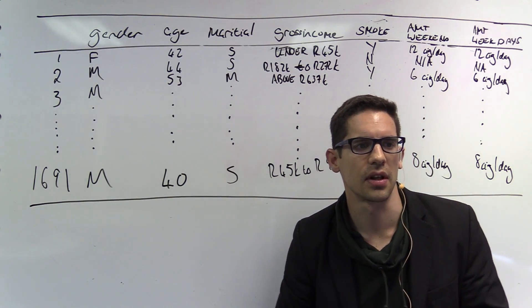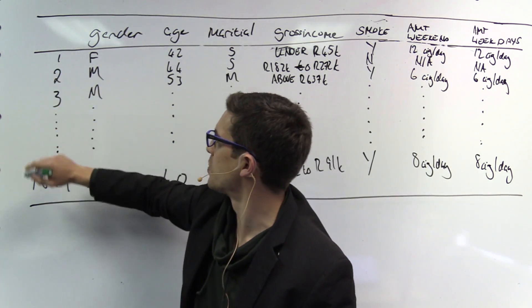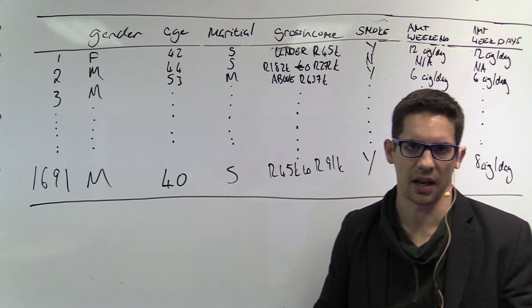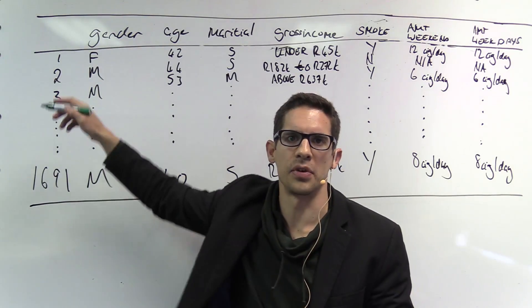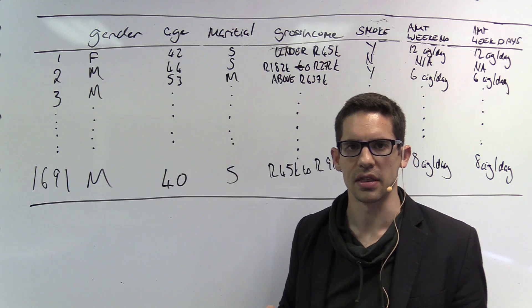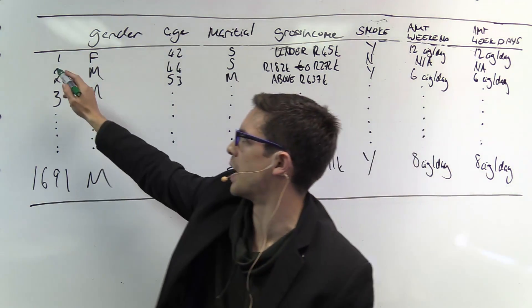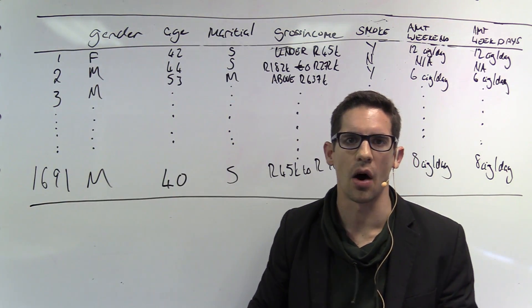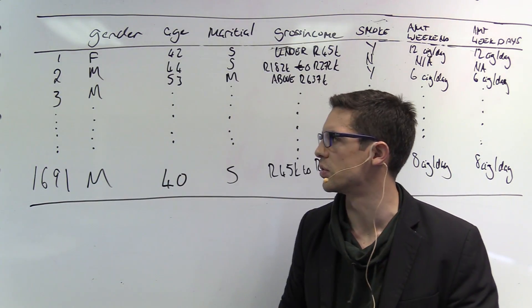The first question asks: what does each row of the data matrix represent? Each row represents a case — specifically, a respondent in the survey. This is the person they asked about their smoking habits. So each row in the matrix represents our cases, which in this context are the survey respondents. That's the easy one to answer.